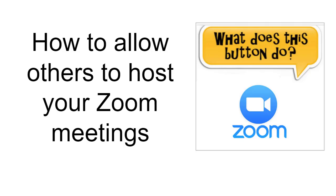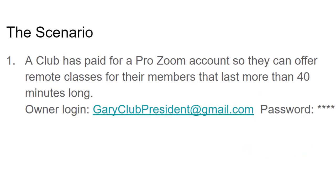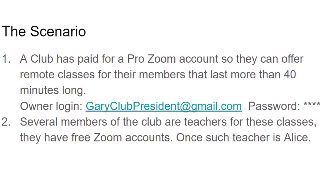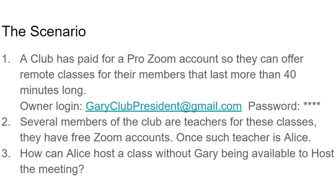Let me set the stage. The scenario is a club has paid for a pro account for Zoom so that they can offer remote classes for their members that last more than 40 minutes. The owner login for that account is the club president, Gary. Several members of the club are teachers for these classes and they only have free Zoom accounts. One such teacher is Alice. So our question is: how can Alice host a class without Gary being available to host the meeting?